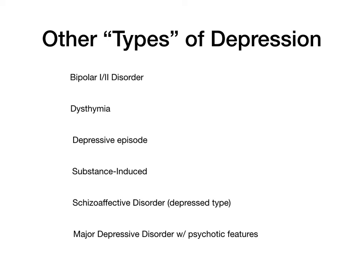Dysthymia is basically at least two years of SIG-E CAPS symptoms, but fewer than five of them. In MDD you need at least five; if you never reach that threshold but it goes on for at least two years, that's dysthymia — a little bit of depression, not yet major depression, but persisting for a very long time.